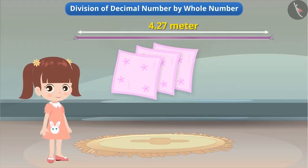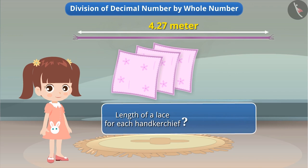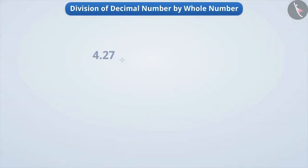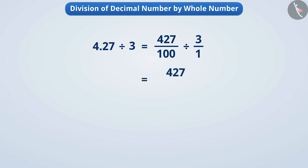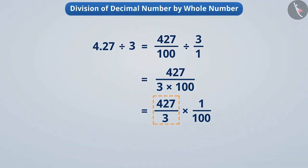Now suppose she had used 4.27 meter lace for all three handkerchiefs. Then how much lace would she need for each handkerchief? Let's find out. For this, we will divide 4.27 by 3. 4.27 divided by 3 is equal to 427 by 100 divided by 3 by 1, which is equal to 427 by 3 into 100, which is equal to 427 by 3 into 1 by 100. Now let's divide 427 by 3.